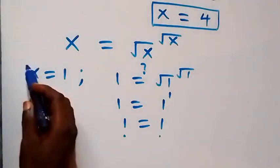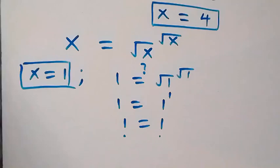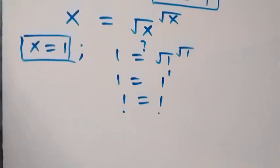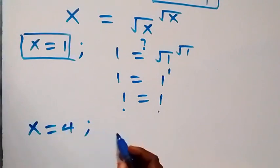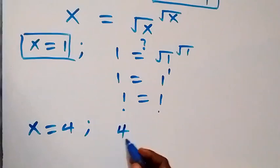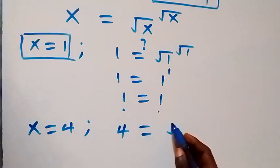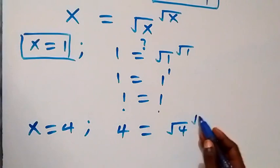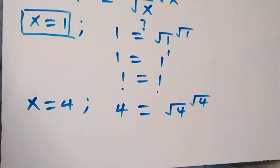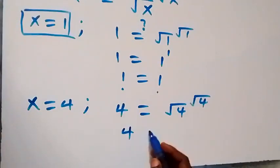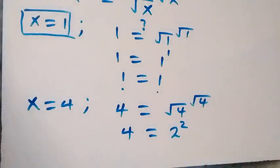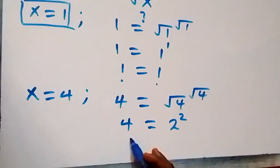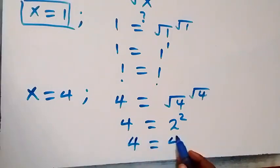When x equals 4: the equation becomes 4 equals root 4 raised to power root 4, which is 2 raised to power 2, equals 4. So 4 equals 4, and x equals 4 satisfies the given problem as well.